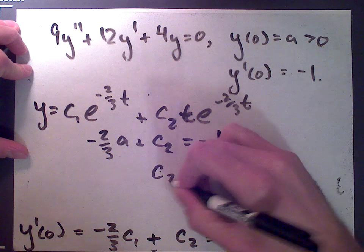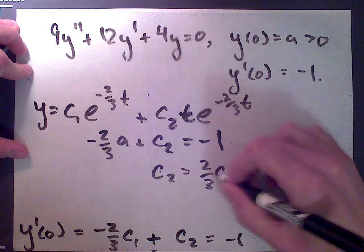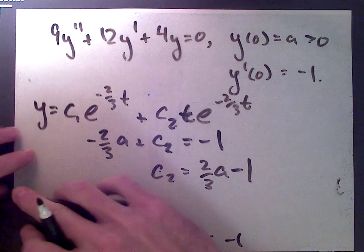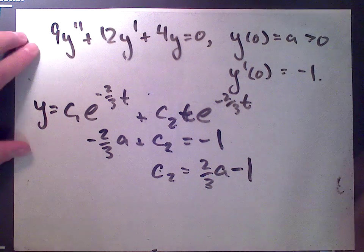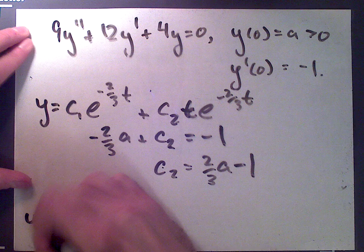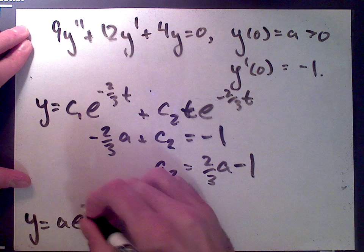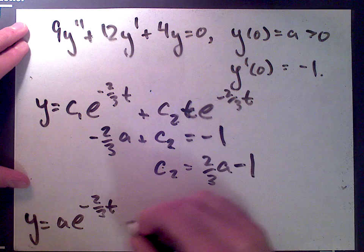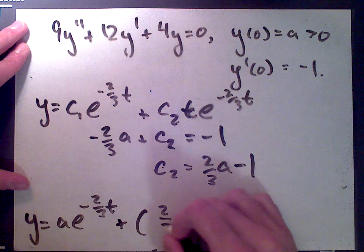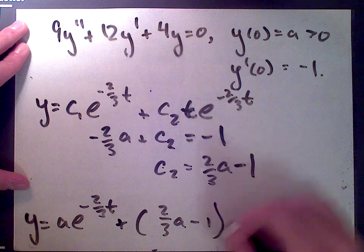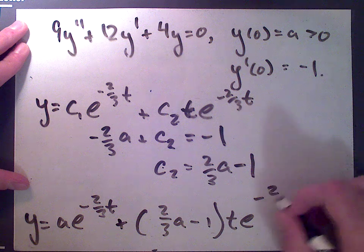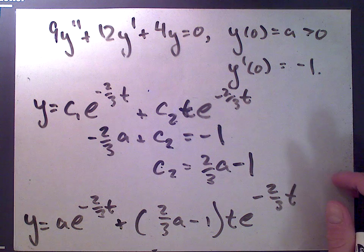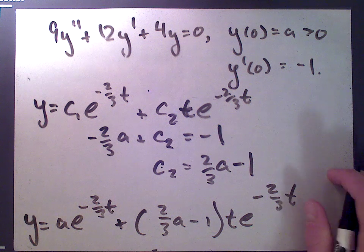Since c1 = a, we get -2a/3 + c2 = -1, and solving for c2 gives c2 = 2a/3 - 1. The complete solution to the initial value problem is: y = a·e^(-2t/3) + (2a/3 - 1)·t·e^(-2t/3).